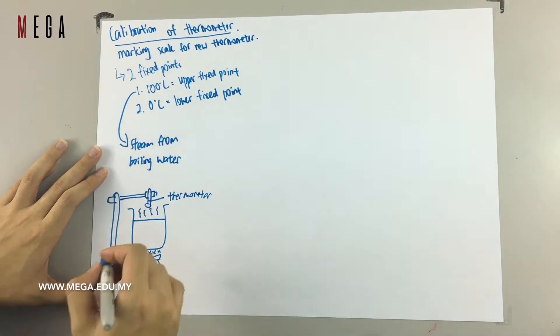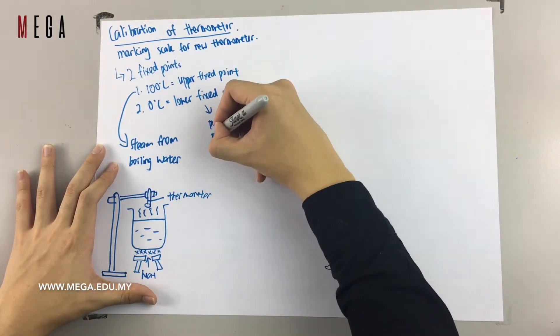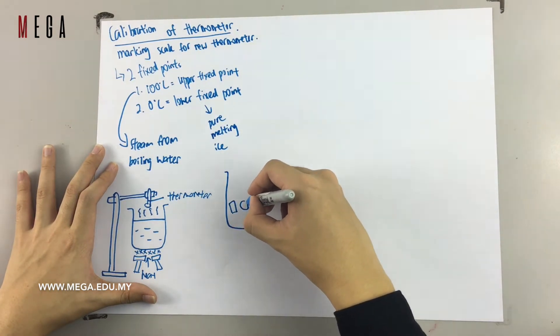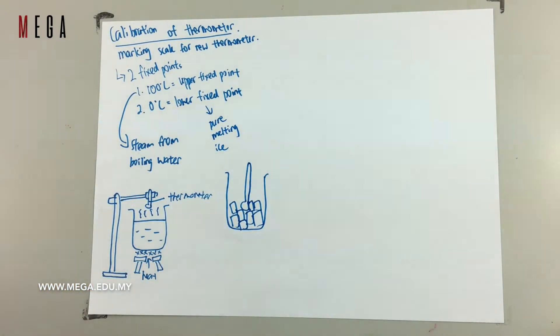And next, when we talk about the pure melting ice, it means that we are taking the lower fixed point. So remember, you need to put the thermometer inside the beaker of ice and it must be pure ice. It means that they must be getting from pure water, not salt water or sea water.